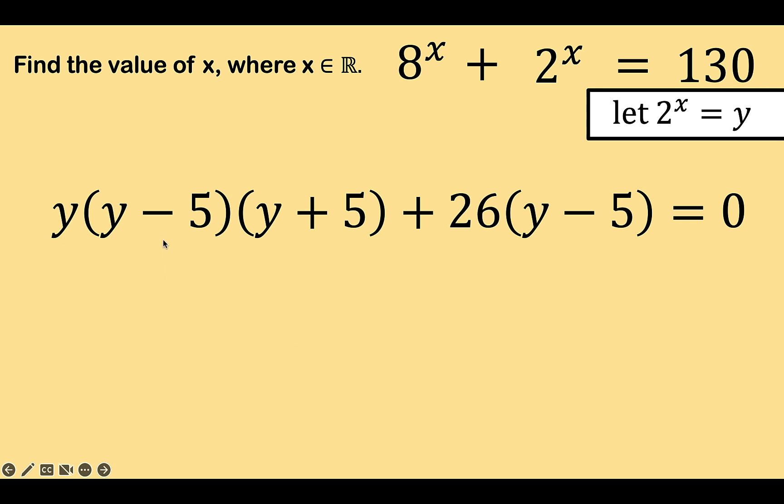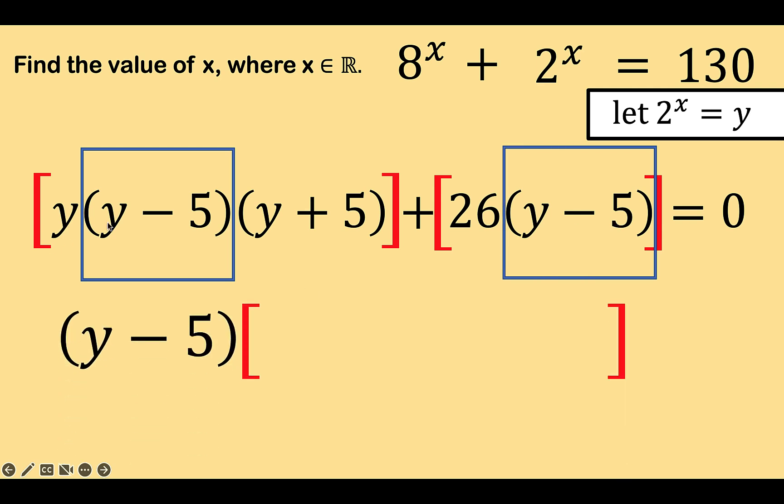Notice that this y minus 5 and this y minus 5 are common factors as well. So we can perform again factoring by grouping. Group this as one group and group this part as another group equals 0. y minus 5 is common to these two groups. So factoring out now y minus 5, we can cancel y minus 5 out. What's left is y times the quantity y plus 5 plus 26 equals 0.